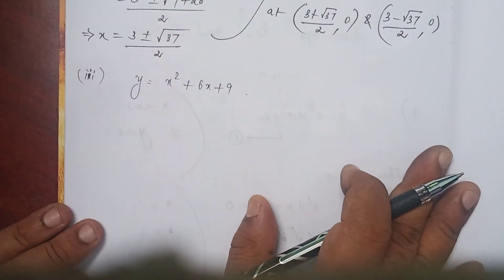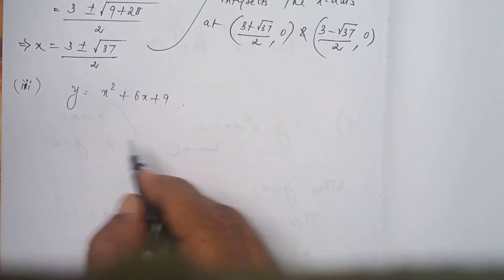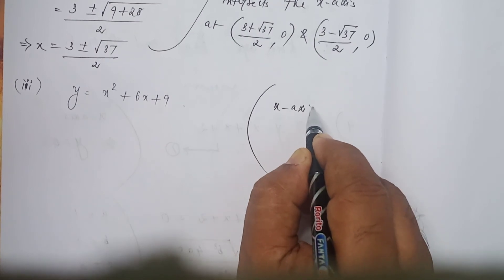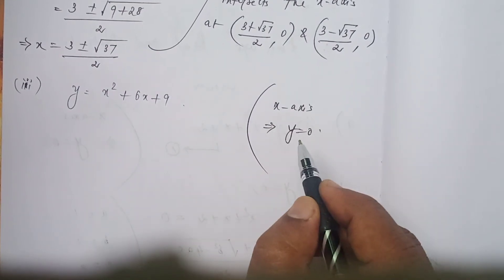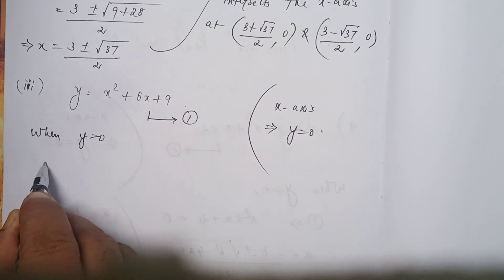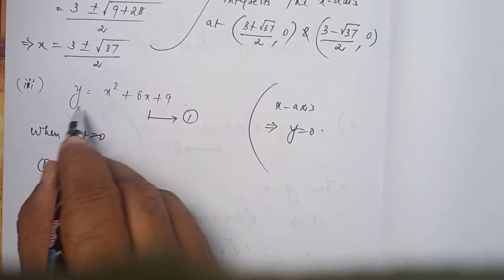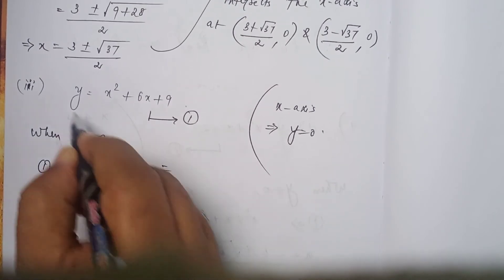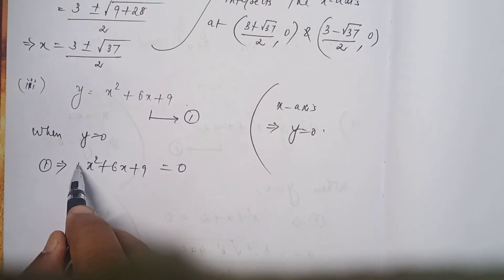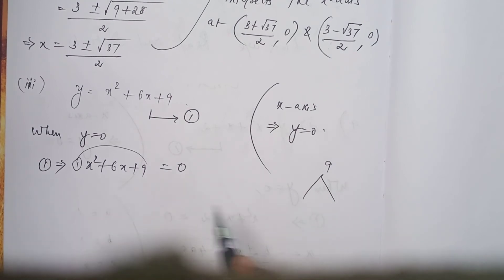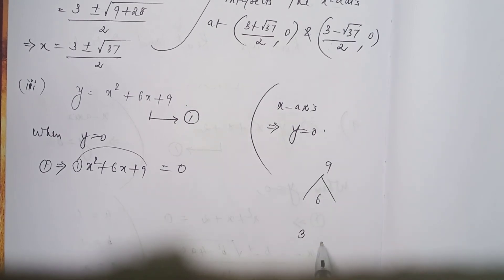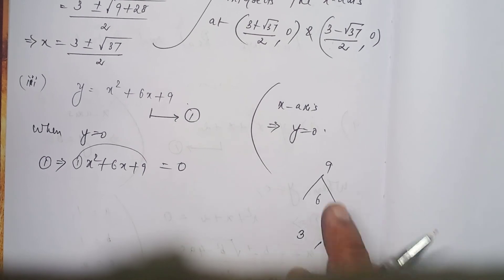Subdivision number 3. If the curve intersects the x-axis, y = 0. When y = 0, equation 1 implies x² + 6x + 9 = 0. If possible, factorize: coefficient of x² is 1; 1 × 9 = 9; coefficient of x is 6. Product 9, sum 6 — the two numbers are 3 and 3, since 3 + 3 = 6 and 3 × 3 = 9.